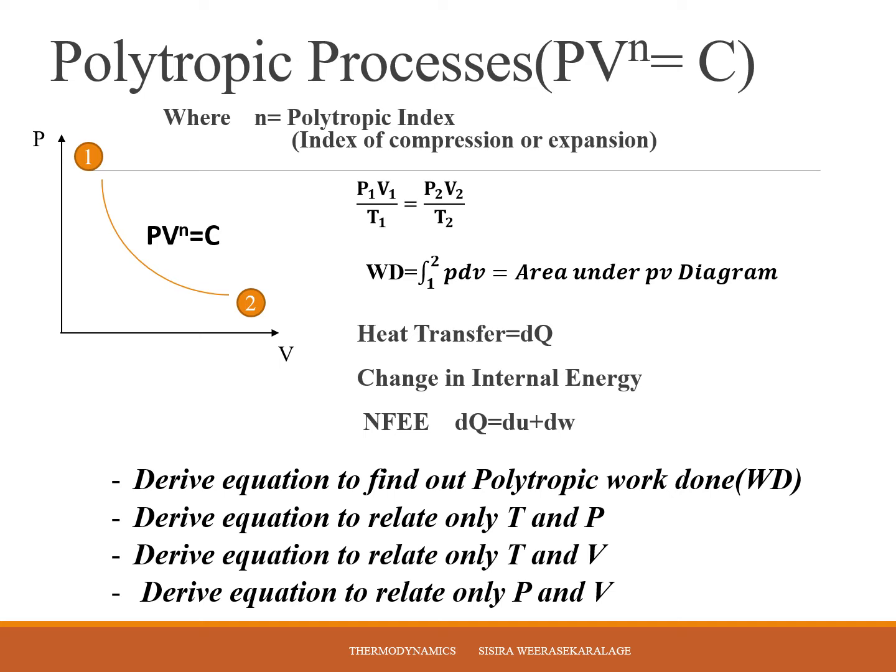The polytropic process is a law with PV to the power N equal constant. If it is expansion then it should be the volume increase side, that means 1 to 2. If it is compression it should be volume decrease side, that means 2 to 1. In addition to this law you can apply your polytropic law P1 V1 to the power N equal P2 V2 to the power N. That is one equation you can use. Similarly, you can apply state equation which is P1 V1 over T1 equal P2 V2 over T2 for these two states 1 and 2.